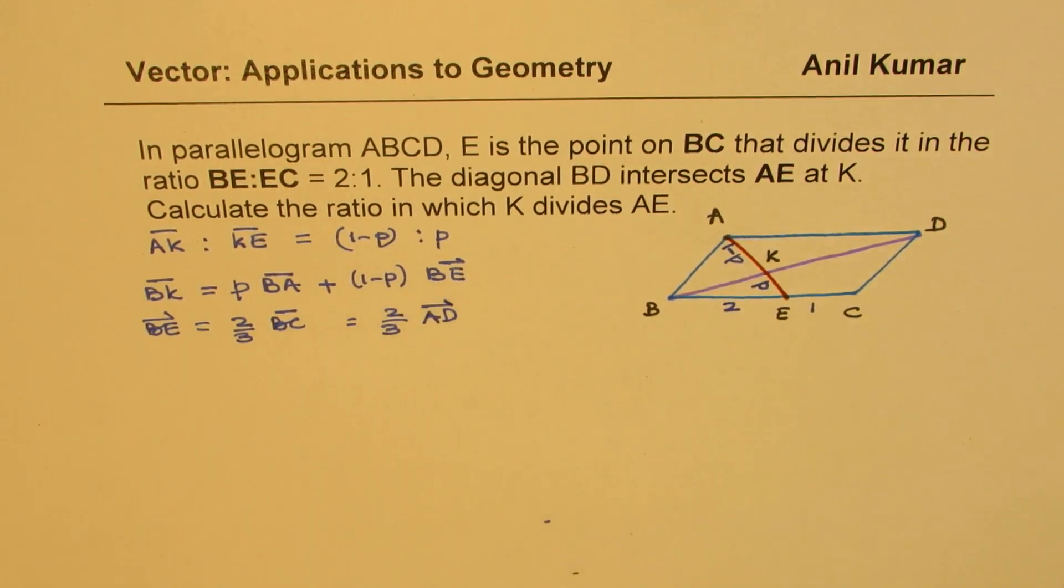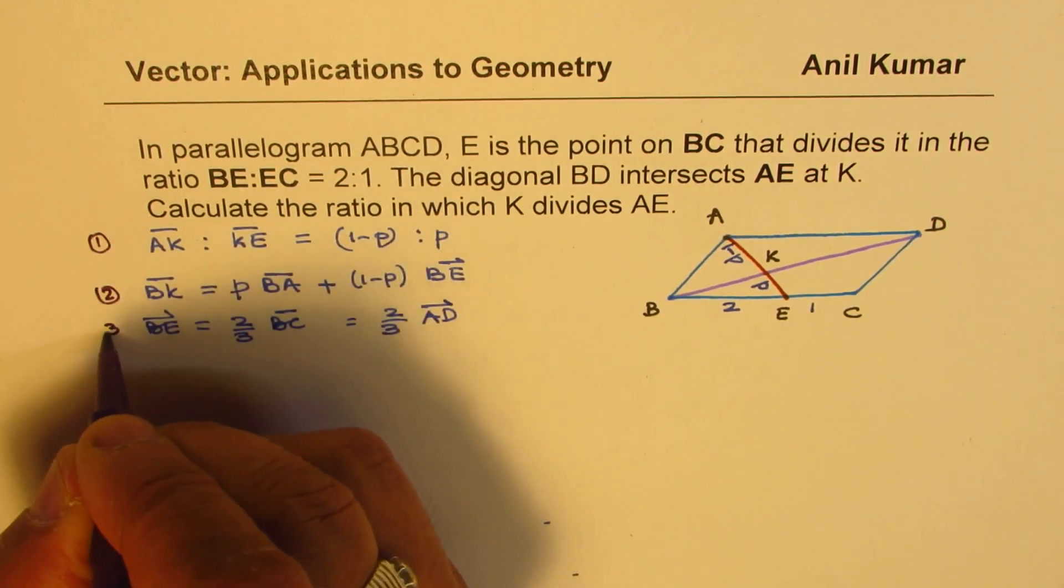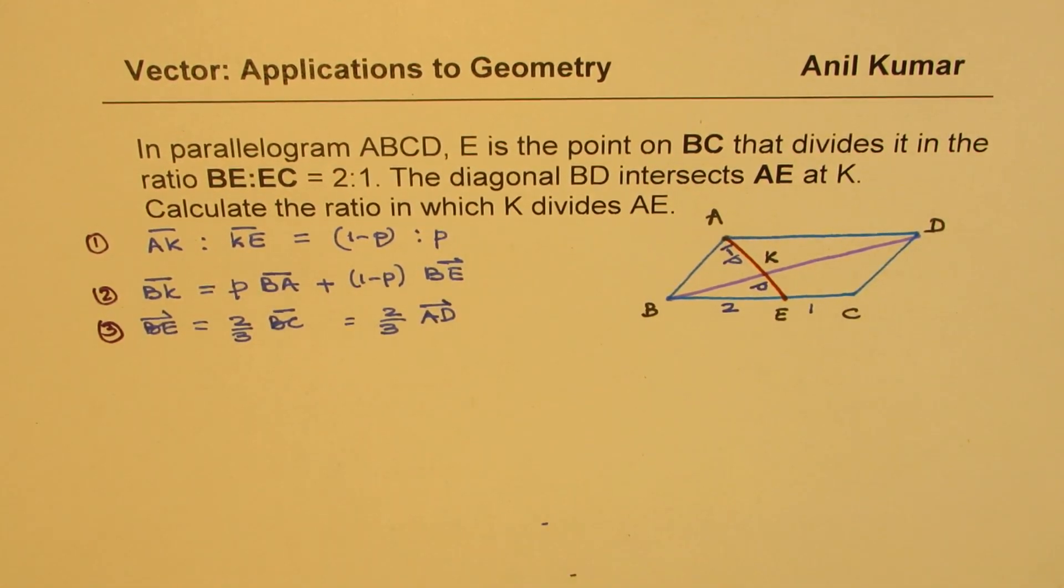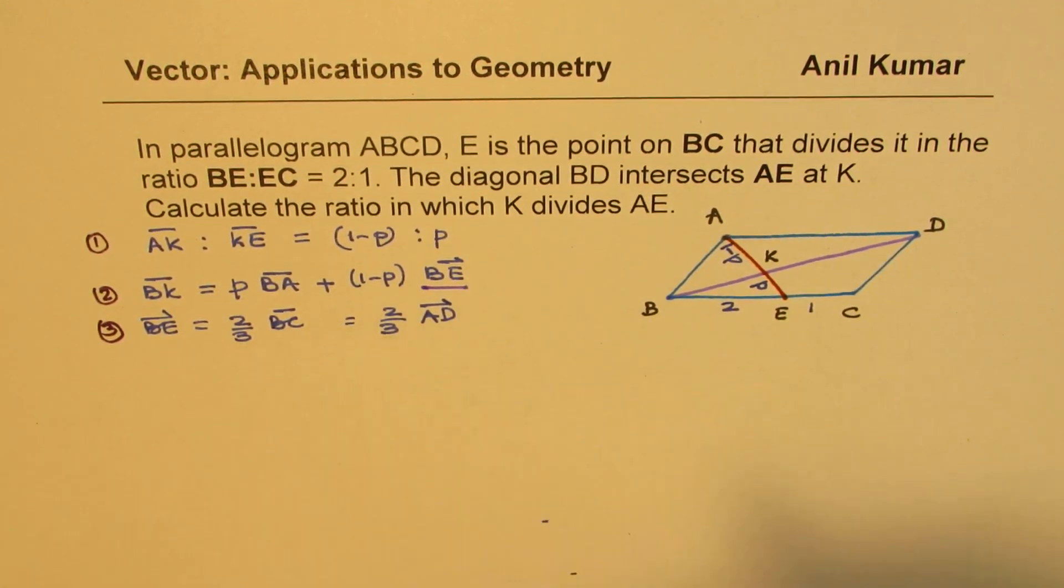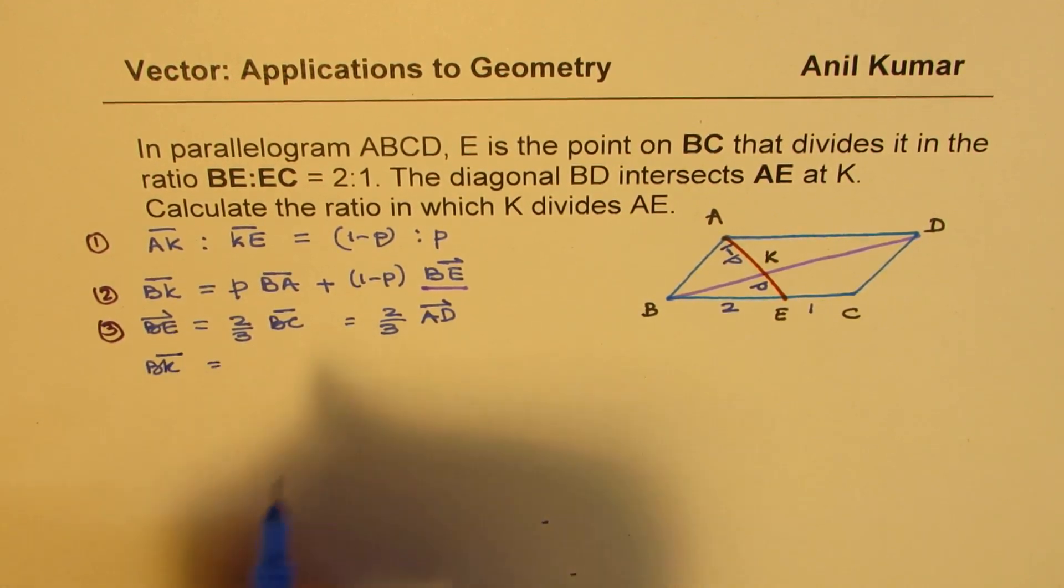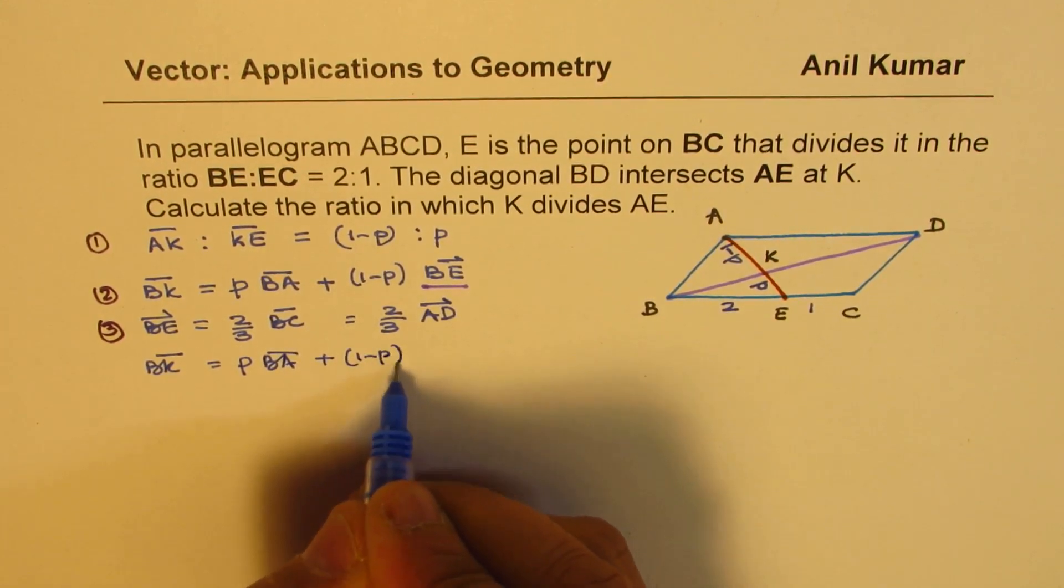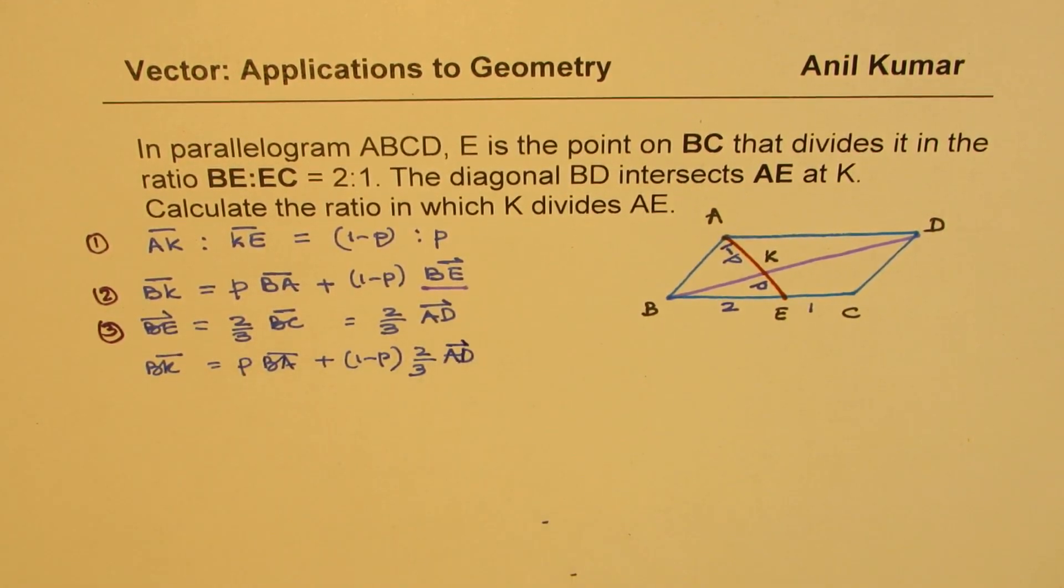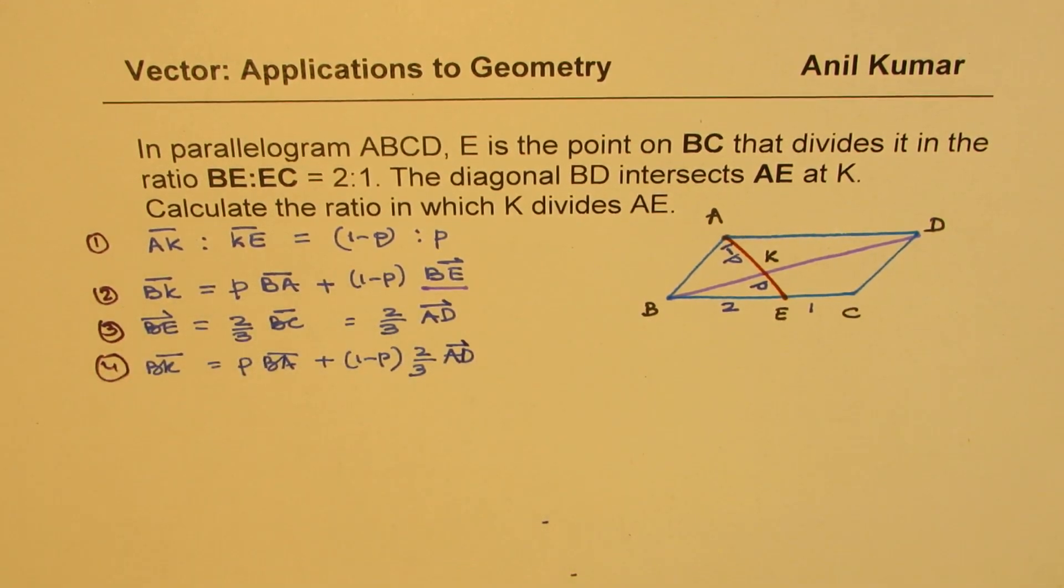So replacing in my first equation - let's number these equations. This is equation 1, this is 2, and this is 3. Now, we'll replace BE with 2/3 AD. So we can write BK = P·BA + (1-P)·(2/3)AD. Let's call this equation 4.